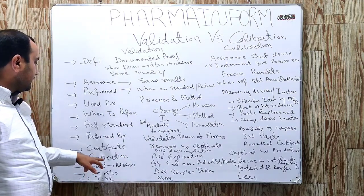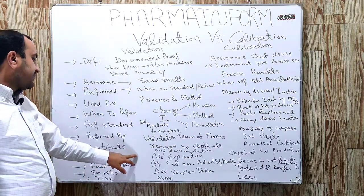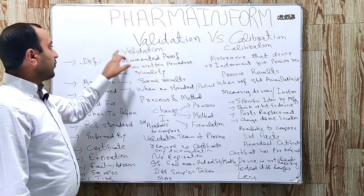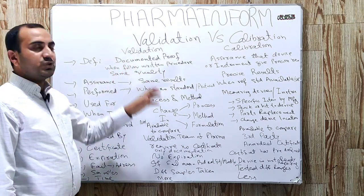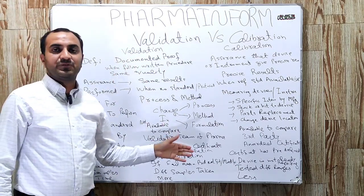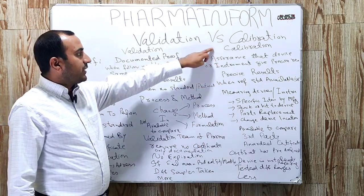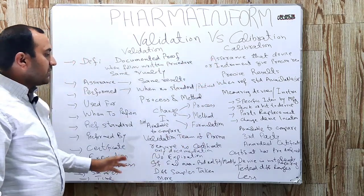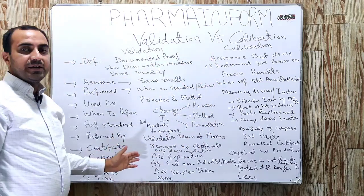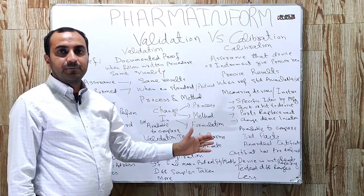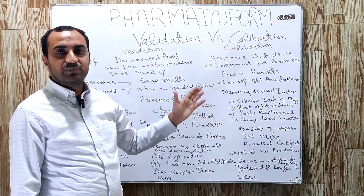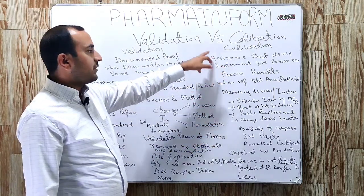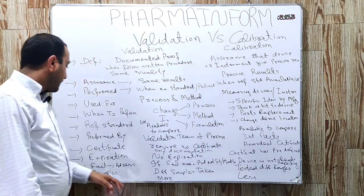Regarding expiration: for validation, there is no specific expiry date. For calibration, we follow the expiry date provided by the third party, which is mentioned on the certificate of calibration.